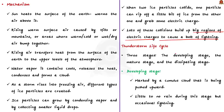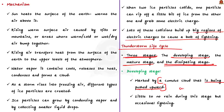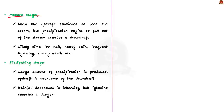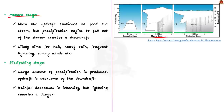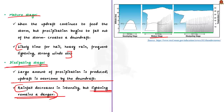Thunderstorms have three stages in their life cycle: the developing stage, the mature stage, and the dissipating stage. The developing stage is marked by a cumulus cloud being pushed upward by a rising column of air, with little to no rain but occasional lightning. The thunderstorm enters the mature stage when the updraft continues to feed the storm but precipitation begins to fall, creating a downdraft — a column of air pushing downward. The mature stage is the most likely time for hail, heavy rain, frequent lightning, and strong winds. Eventually, a large amount of precipitation is produced and the updraft is overcome by the downdraft, beginning the dissipating stage, where rainfall decreases in intensity but lightning remains a danger.